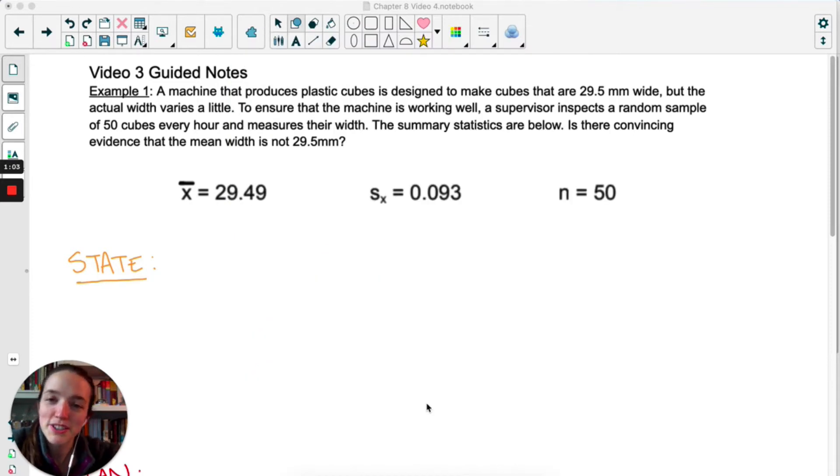A machine that produces those little plastic cubes for Don't Break the Ice is designed to make cubes that are 29.5 millimeters wide, but it's a machine. It's not going to be exactly perfect. There might be some variability depending on the material being used or whatever.